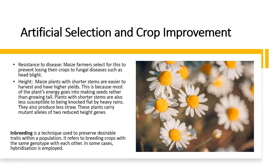Short plants also tend to produce less straw. Because straw is a waste material that many farmers don't know what to do with, they prefer to get shorter plants that would give them a high yield, less straw, and will be less likely to be beaten down by rain in case of a heavy rainfall.